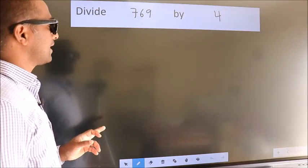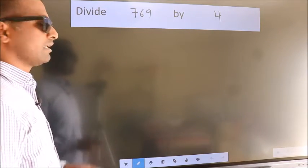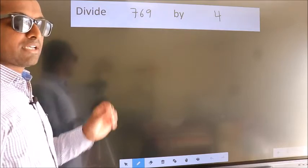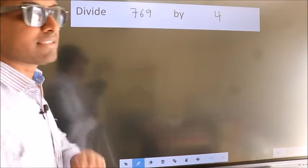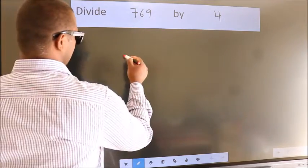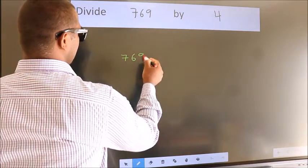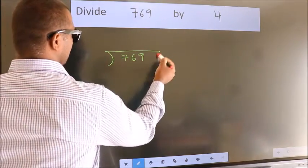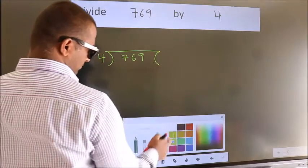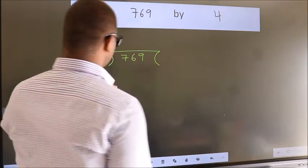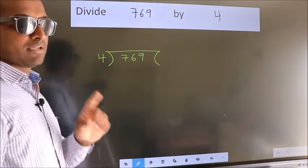Divide 769 by 4. To do this division, we should frame it in this way. 769 here, 4 here. This is your step 1.